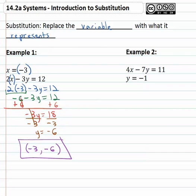Let's try another example where we can substitute or replace the variable with what it represents. Here we're told four x minus seven y is eleven, and we know that y is negative one.